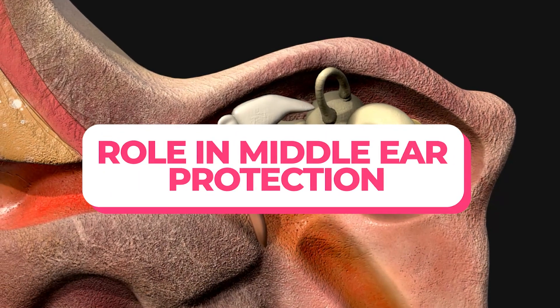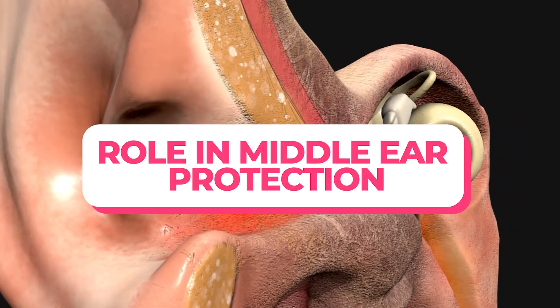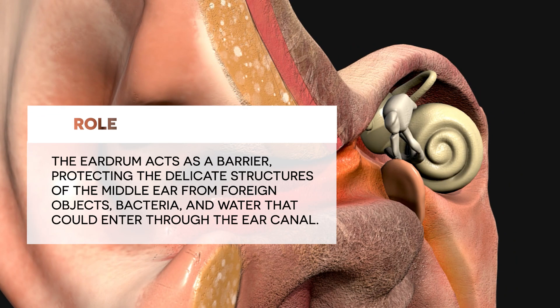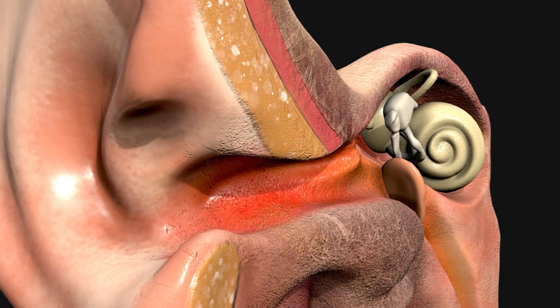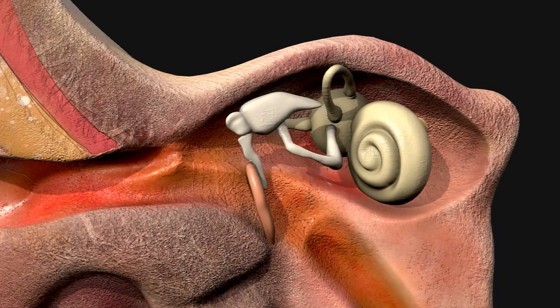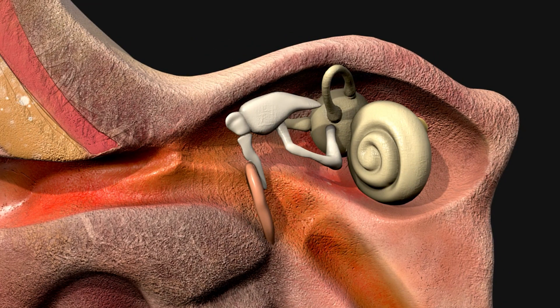The eardrum also acts as a barrier, protecting the delicate structures of the middle ear from foreign objects, bacteria, and water that could enter through the ear canal. It also helps to maintain the proper pressure balance between the external environment and the middle ear, which is crucial for the proper functioning of the middle ear bones.